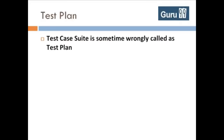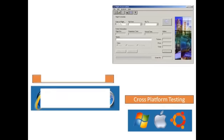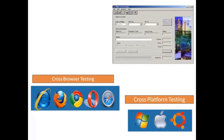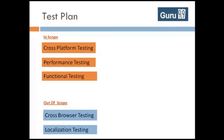A test plan is often confused with a test case suite. For the Flight Reservation application, you might want to test how it works when installed on different operating systems, but testing for different browsers does not make sense since it is not a web-based application. Based on this contextual analysis, you can make a list of testing types that are in scope and will be tested, and testing types that are out of scope and will not be executed.